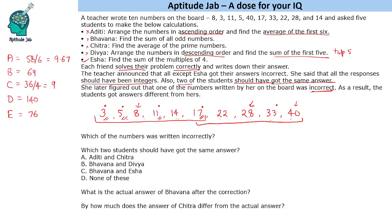The main task is to figure out the wrong number. The condition is that all responses should have been integers — it's easy to see a mistake was made. Since Isha got the correct answer, 8, 20, 8, and 40 are not among the incorrect numbers, meaning the incorrect number has to be one of the others.